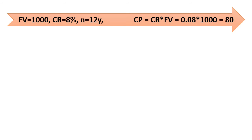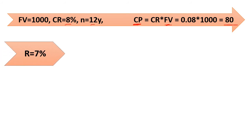Given data: face value of 1,000 dollars, coupon rate of 8%, and 12 years to maturity. The coupon payments are 8% times 1,000 dollars, equaling 80 dollars per year. For scenario one, the required rate of return is 7%, which is less than the coupon rate of 8%, so we expect bond value to be greater than the face value.